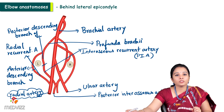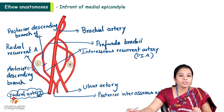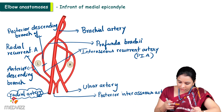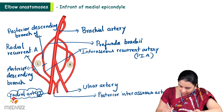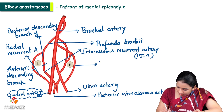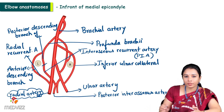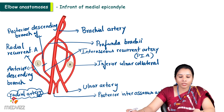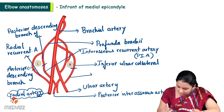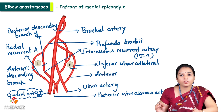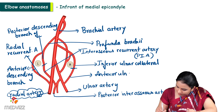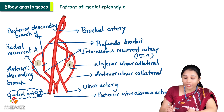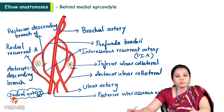On the medial side, in front of the medial epicondyle, the inferior ulnar collateral branch of the brachial artery — which is a direct branch of the brachial artery — anastomoses with the anterior ulnar recurrent branch of the ulnar artery. So the inferior ulnar collateral artery meets the anterior ulnar recurrent artery anterior to the medial epicondyle.